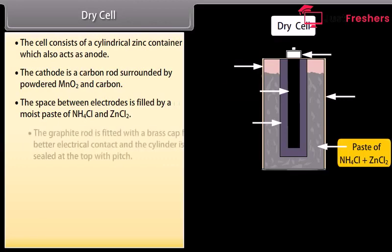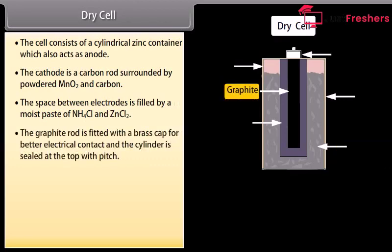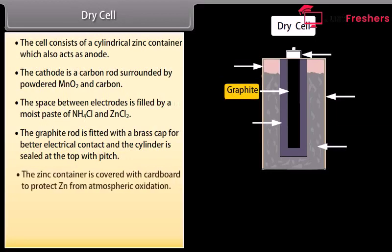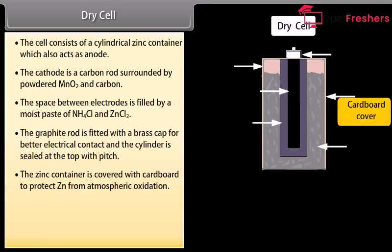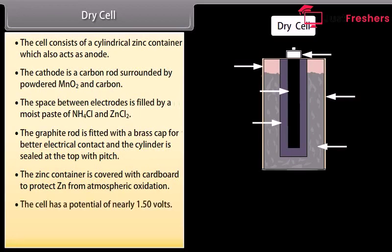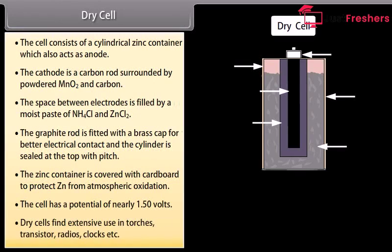The graphite rod is fitted with a brass cap for better electrical contact and the cylinder is sealed at the top with pitch. The zinc container is covered with cardboard to protect Zn from atmospheric oxidation. The cell has a potential of nearly 1.50 volts. Dry cells find extensive use in torches, transistors, radios, clocks, etc.